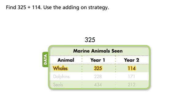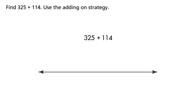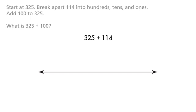Find 325 plus 114. Use the adding on strategy. Start at 325. Break apart 114 into hundreds, tens, and ones.